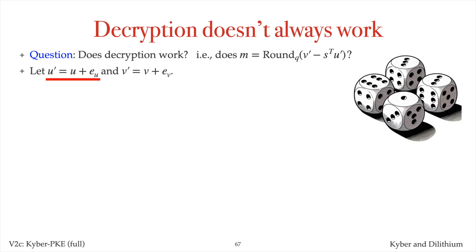Let E_U be the error when decompressing C1 to U'. So U', which is recovered during decryption, equals U, the vector of polynomials computed during encryption, plus the error vector E_U. Similarly, let E_V be the error when decompressing C2 to V', so V' equals V plus E_V.